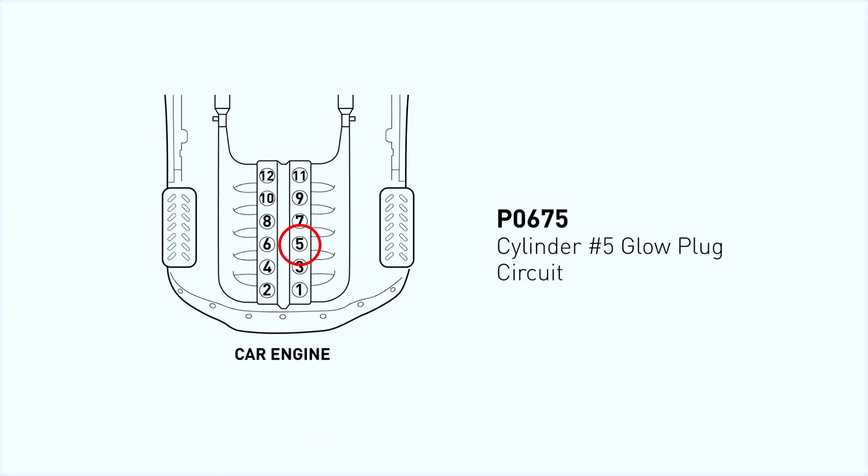The P0675 code is specific to diesel engines and means the engine control module (ECM) has detected a fault in the glow plug circuit for cylinder five. Glow plugs are essential for starting your diesel engine in cold weather. When one fails, you'll notice hard starts, excessive smoke, or even a rough idle.